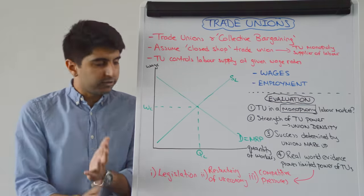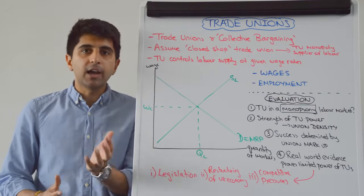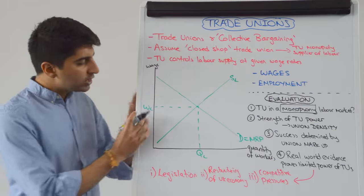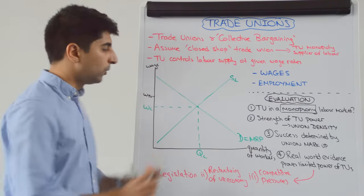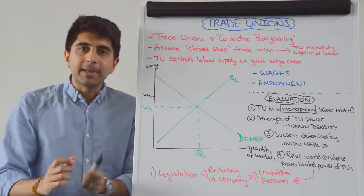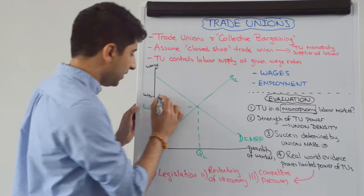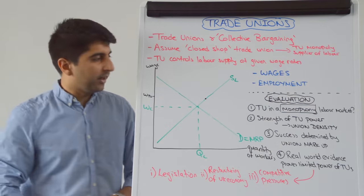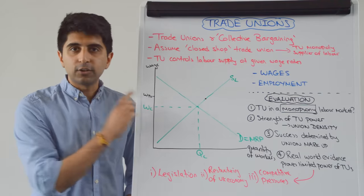Obviously if trade unions are getting involved, they are not happy with the competitive wage — they say it's too low for the workers in this industry. The trade union will fight for higher wages, saying we want a wage of WTU. But at that wage rate there is a limit to the number of workers under the control of the trade union, and that limit sits on the existing supply curve — the number of workers very happy with that wage rate.